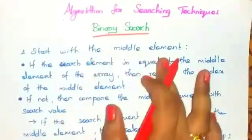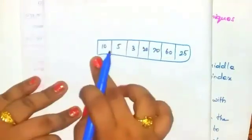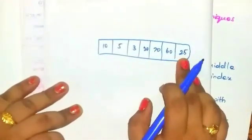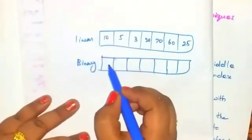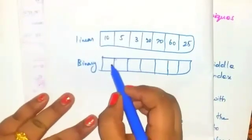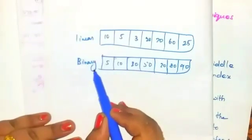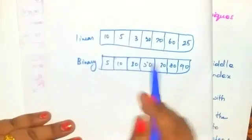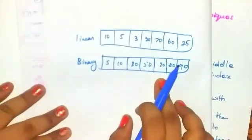The difference between linear search and binary search is: in linear search we don't need to give the array in sorted order, but in binary search we must give the elements of the array in a sorted order. Only then can you apply binary search to that array.